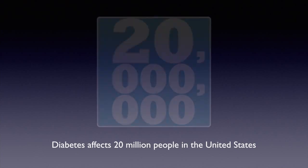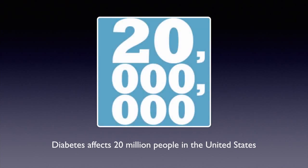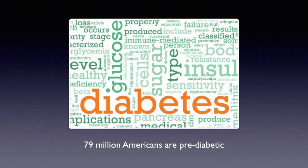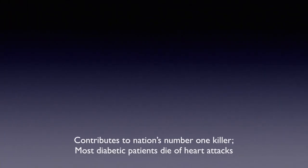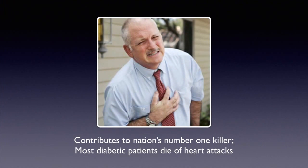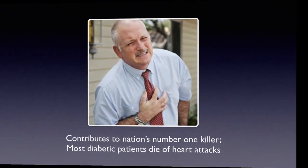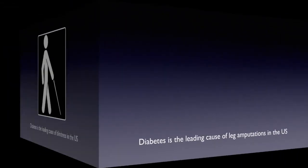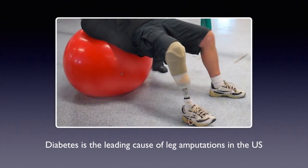Of course. Diabetes is the fastest growing epidemic in our nation, and currently about 20 million people have been diagnosed with diabetes, but that's just the tip of the iceberg. There are one million new cases diagnosed every year. 79 million Americans are pre-diabetic, just about to become diabetic, and it does contribute to the nation's number one killer — heart attack. It's the leading cause of blindness in the United States, and also the leading cause of leg amputations in the United States.